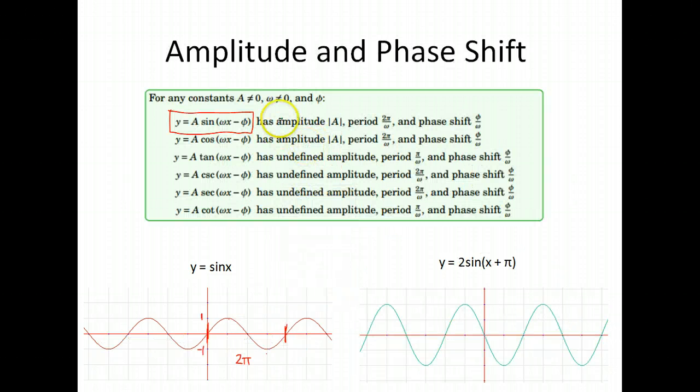The other thing that can happen to a graph is a phase shift or an amplitude change. And we've talked a little bit about amplitude change. We know amplitude is determined by the number in front of sine, cosine.